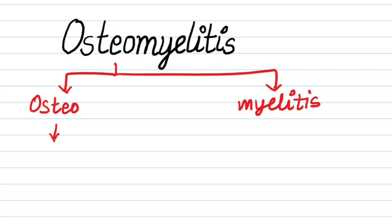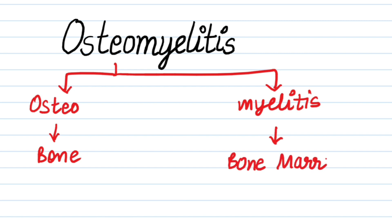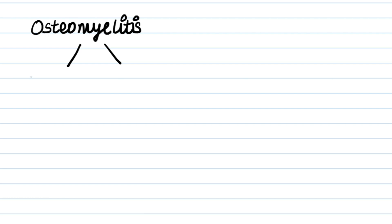Osteo means bone and myelitis means inflammation of bone marrow. Osteomyelitis has two types: acute and chronic. We will discuss both in this video.